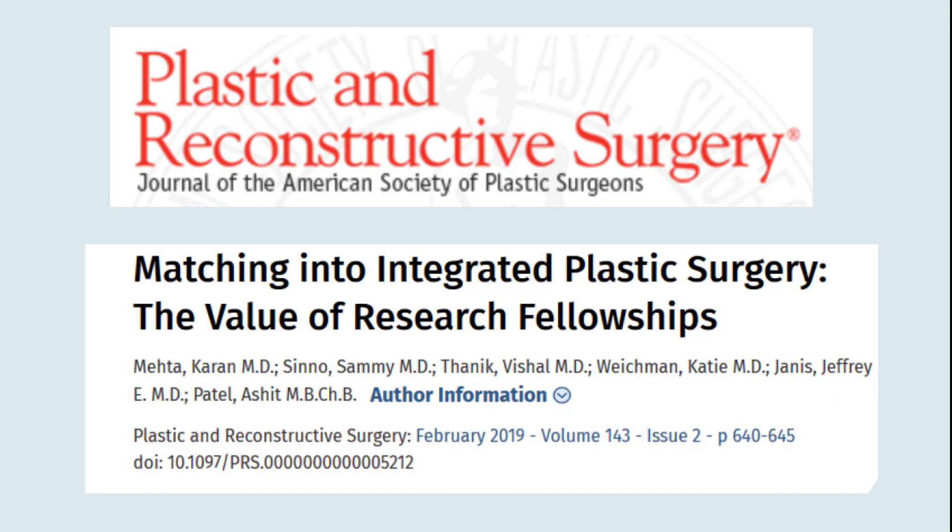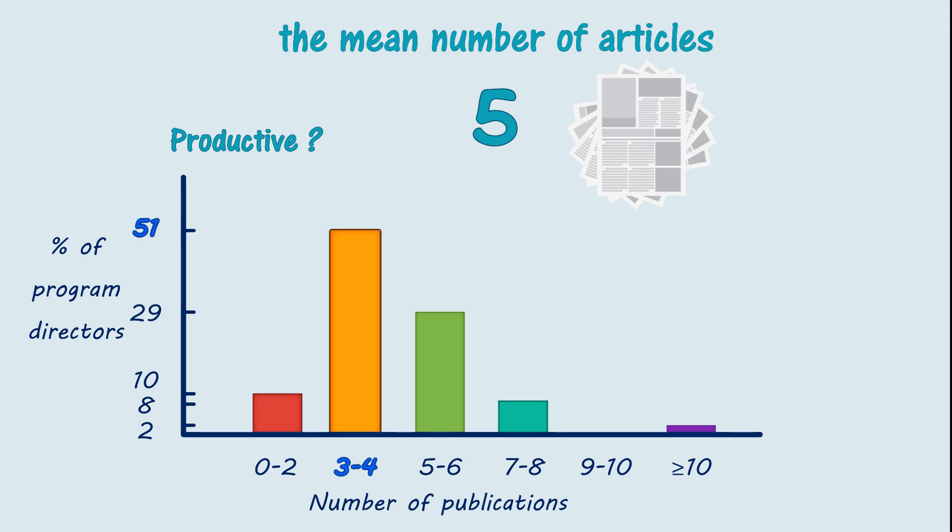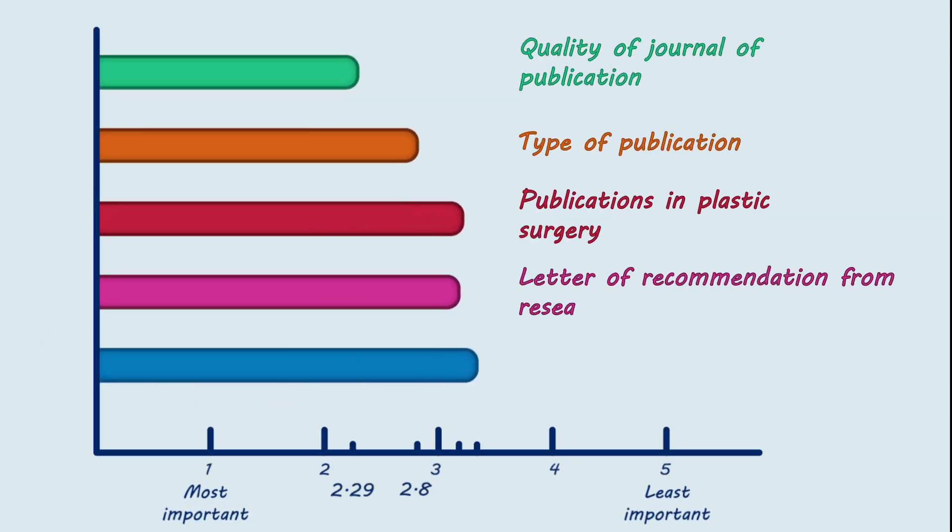A similar study in the plastic surgery literature assessed the value of research for all plastic surgery applicants, including US students. The authors found that the mean number of articles published during the research year was 5. 50% of program directors considered 3 to 4 publications to be productive, and 29% considered 5 to 6 publications to be productive. Similar to the previous study, quality of the journal of publication and type of publication had the highest ranking when reviewing an applicant's research experience.